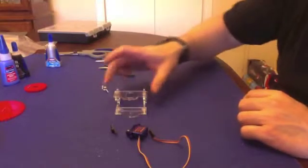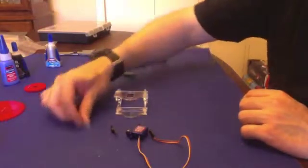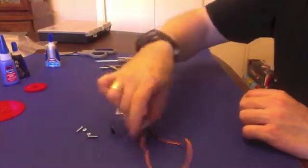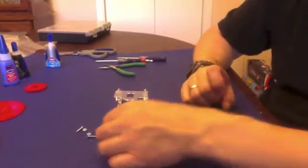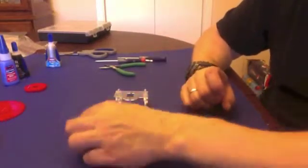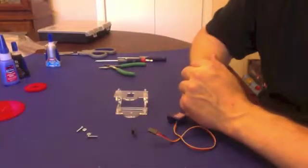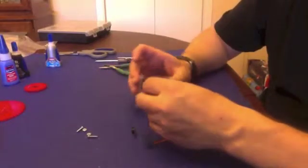Okay, in this step we're going to assemble the servo for the yaw joint. We're using a Tower Pro servo. This is a micro servo. A horn. And two number four by half inch screws. This is actually a fairly simple step.